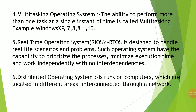Next is the multitasking operating system. A multitasking operating system can perform more than one task at a single instant of time. An operating system which is capable of executing multiple processes while using common processing resources like the CPU is called a multitasking operating system. Today, most operating systems fall under this category — for example, Unix, Windows XP, Windows 7, Windows 8, and Windows 10.